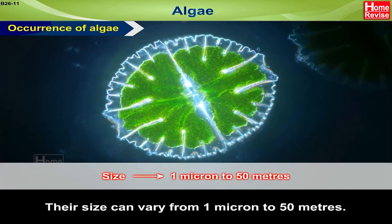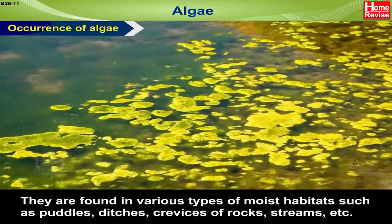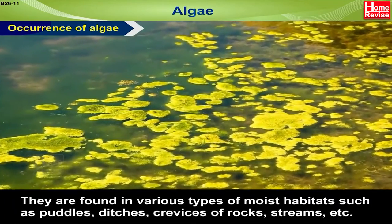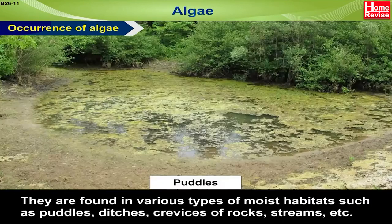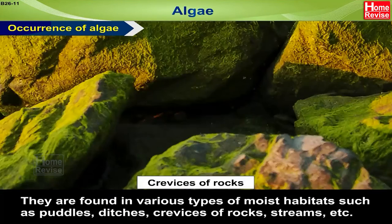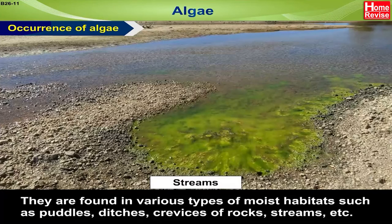Their size can vary from 1 micron to 50 meters. They are found in various types of moist habitats such as puddles, ditches, crevices of rocks, streams, etc.